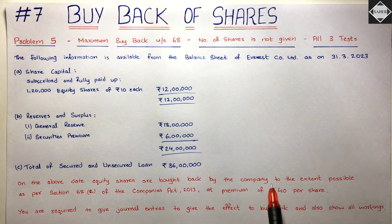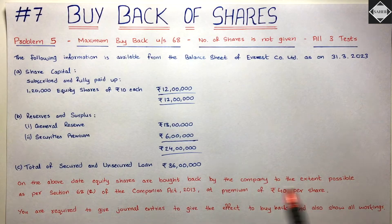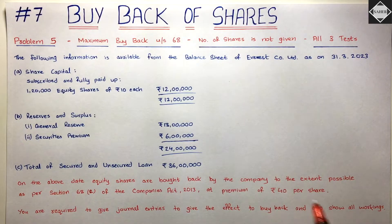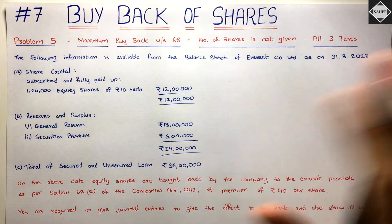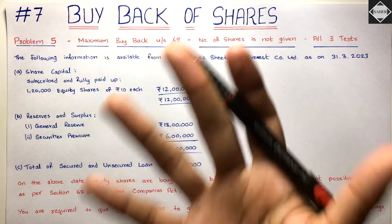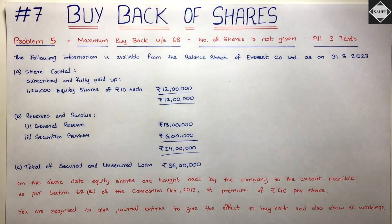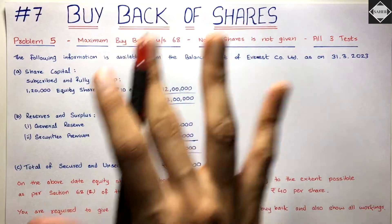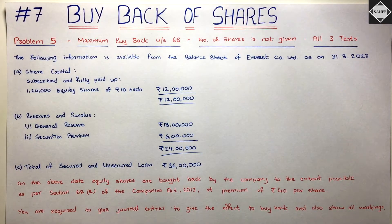Equity shares are bought back to the extent possible as per Section 68 Subsection 2 of the Companies Act 2013, at a premium of ₹40 per share. Don't get confused - ₹40 is not the buyback price. ₹50 is the buyback price. Face value is ₹10, so 10 plus 40 equals 50. ₹50 is the buyback price.